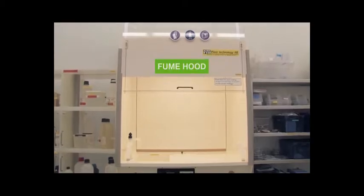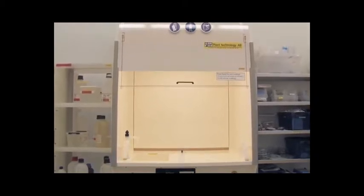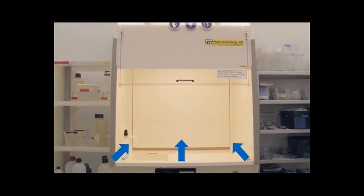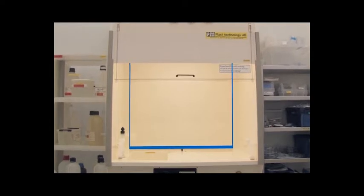A fume hood is a cabinet equipped with an exhaust and usually has a sliding window at the front. Air flow is directed from the clean room into the fume hood. Air exhaust vents are located at the rear of the hood.